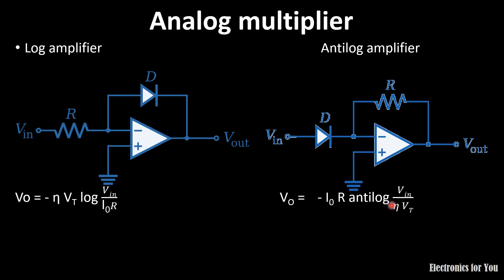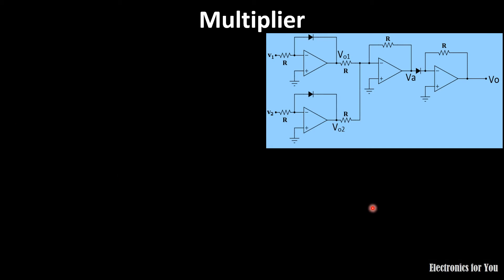The same terms apply to the antilog amplifier, and the output voltage for the antilog amplifier is Vo = −I0·R·antilog(Vin / η·Vt). In the log amplifier, the output is proportional to the logarithm of the input voltage, and in the antilog amplifier the output is proportional to the antilog of the input voltage.